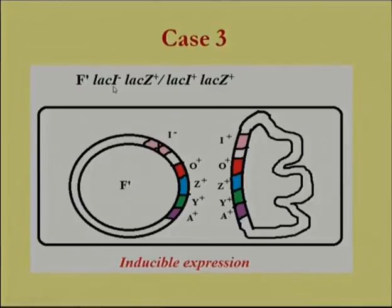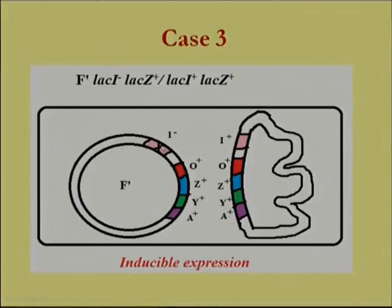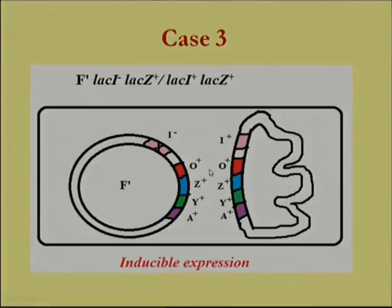Case 3: The prime factor carries a mutation in the lac I gene but wild-type operator and lac Z. The bacterial chromosome has wild-type lac I and wild-type lac Z. Although the lac repressor is non-functional from the prime factor, a functional lac repressor is expressed from the bacterial chromosome. Being trans-acting, this repressor can occupy operators on both the prime factor and bacterial chromosome. When lactose is absent, the repressor blocks expression; when lactose is present, the repressor is removed. The phenotype is inducible.